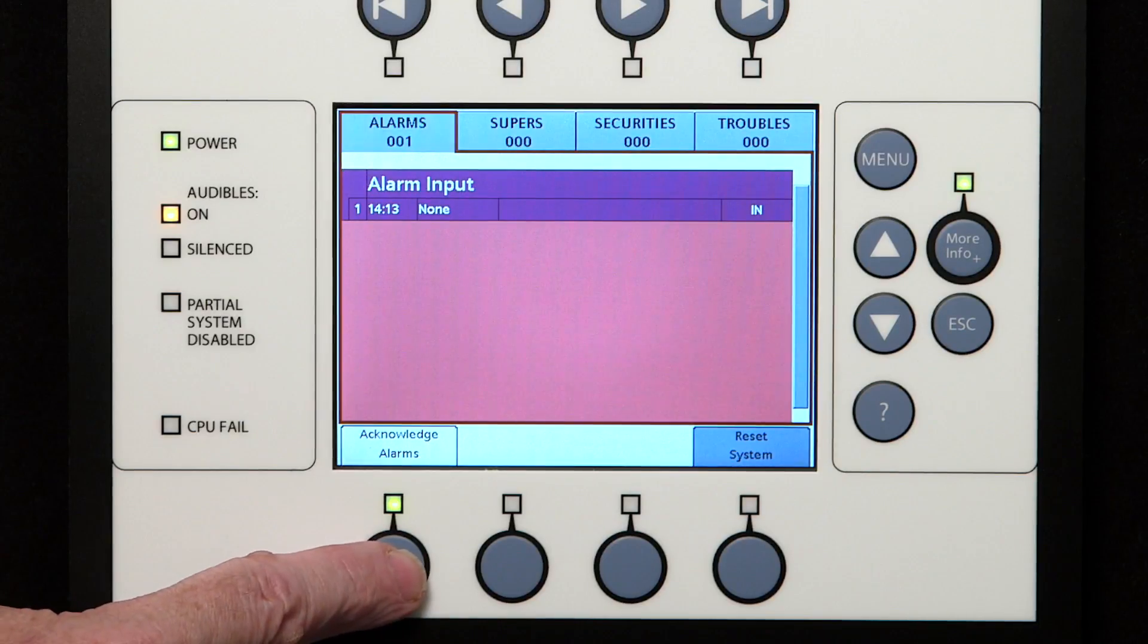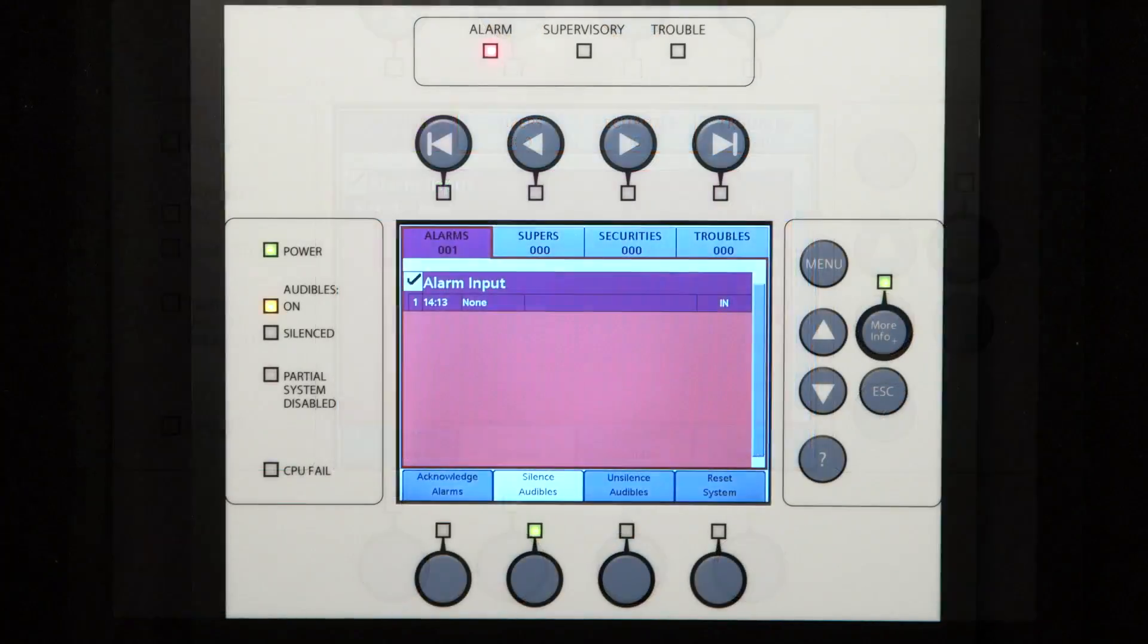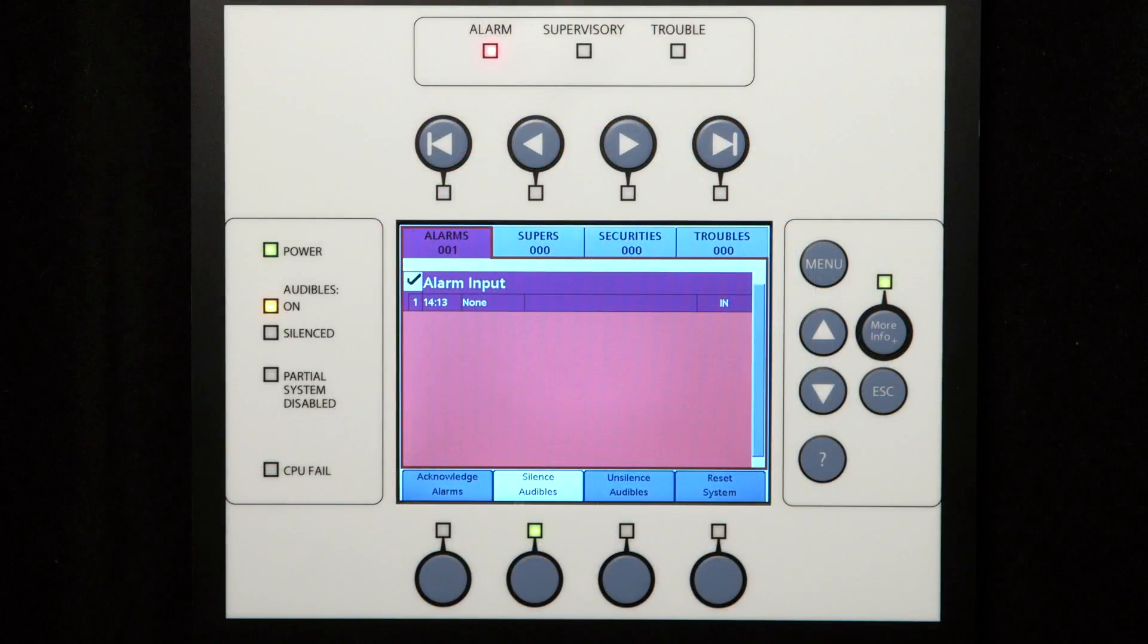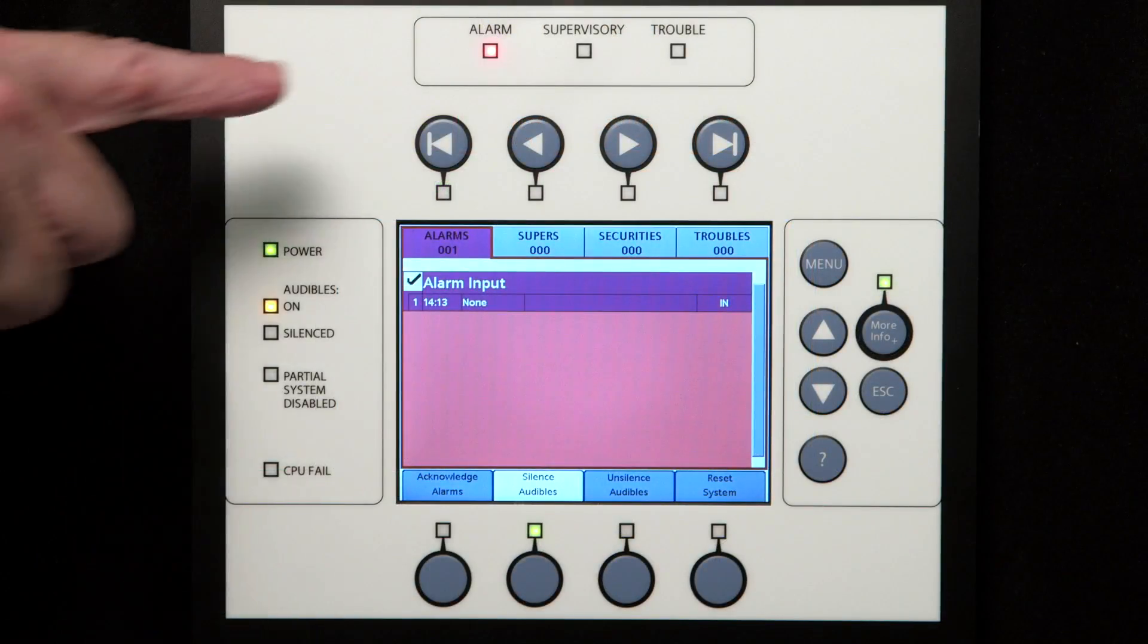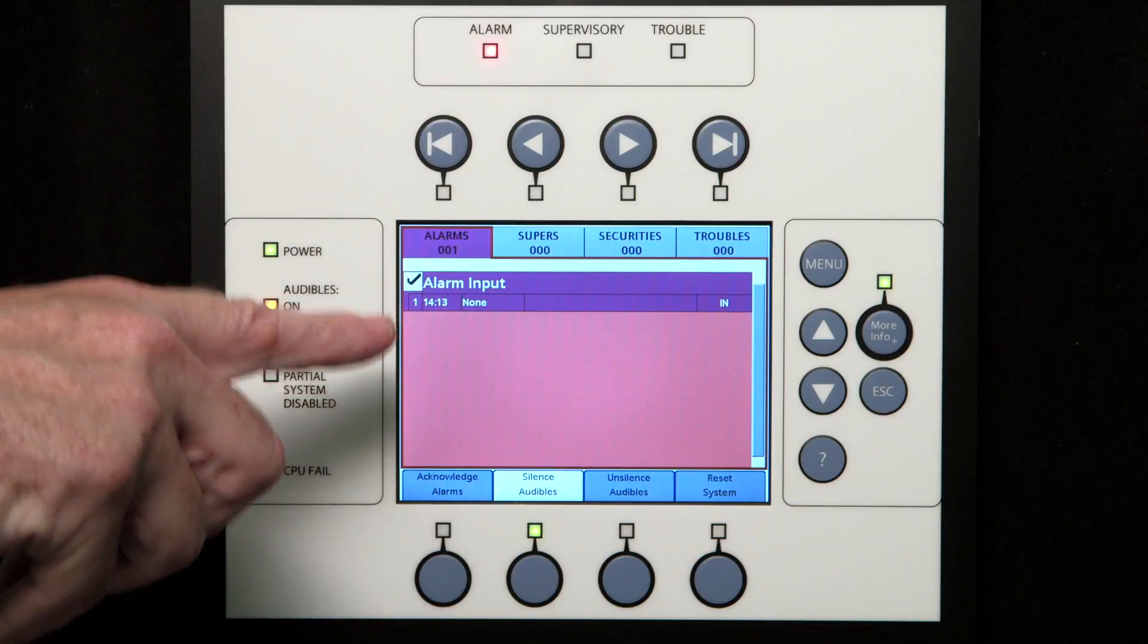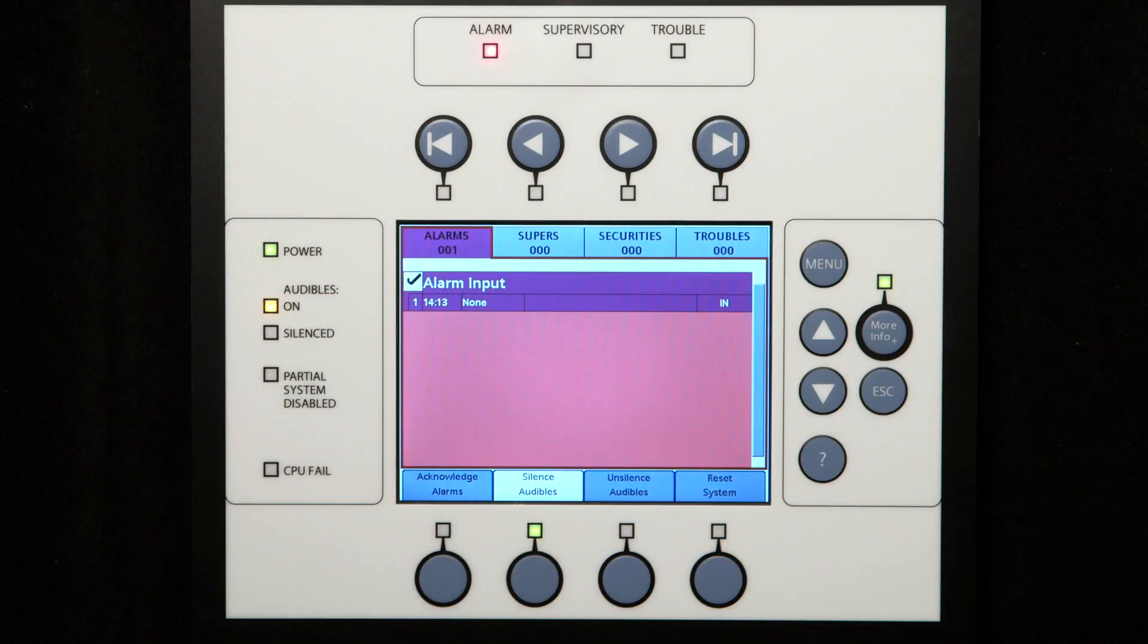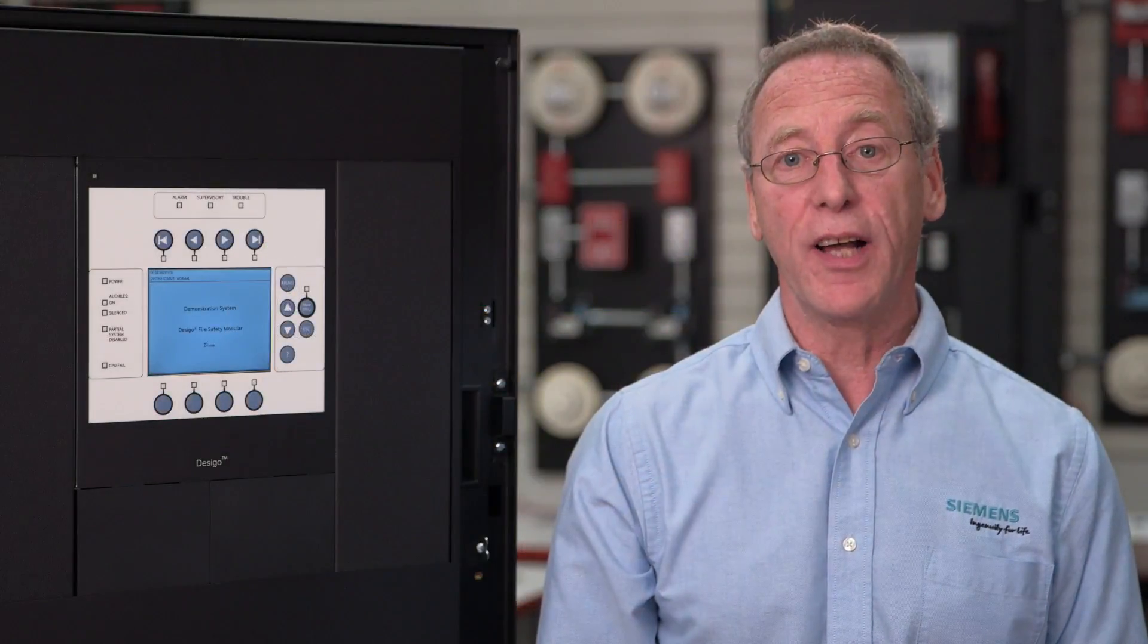It will also turn off the internal panel buzzer. The alarm LED will change from flashing to steady, and the event displayed changes from an exclamation mark to a check mark on the left of the description. The intent of acknowledging events indicates that the operator is aware that the event has occurred.